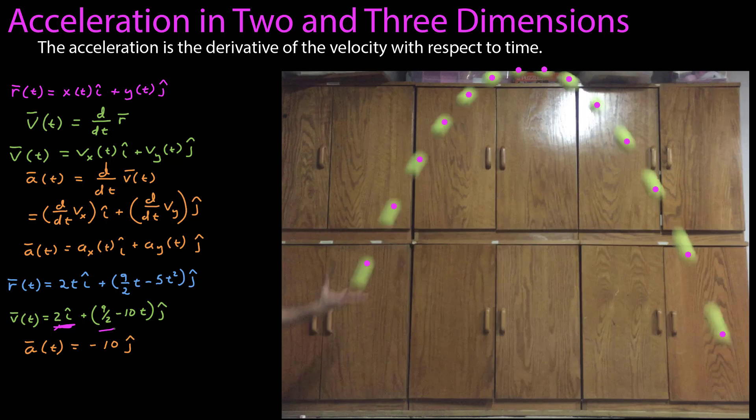Before, we had created a motion diagram of that motion. We took every other frame about 1 15th of a second apart, and then identified the position of the ball to the best we can with a purple dot.